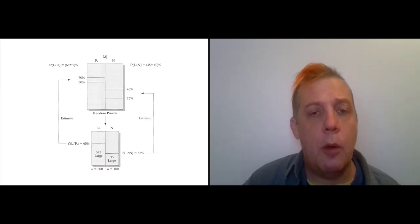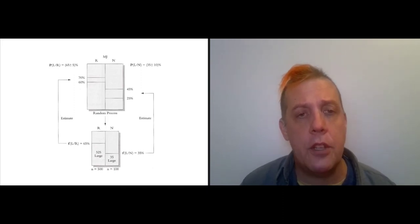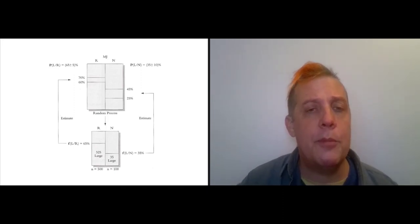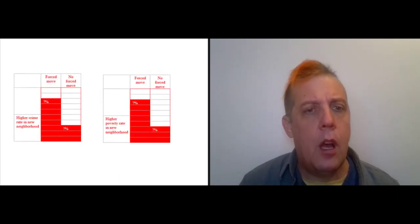One common way people get misled by statistics is for someone to imply that there's a correlation, but they really don't have all of the data you need to fill in all of these boxes. You've got one side of this is a distribution of 63%, the other side is 35%, and so that shows you that there's a correlation there.